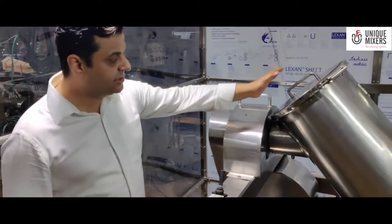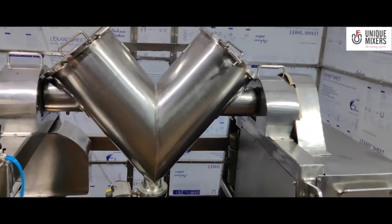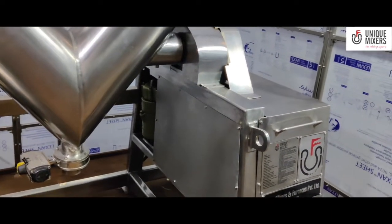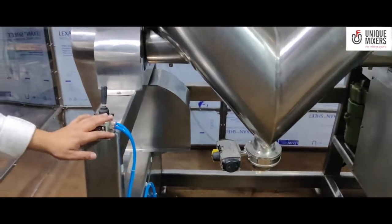The material is charged from the top. The machine is then rotated, the shell is then rotated. That's where the blending happens, and after the blending is completed we have a discharge valve here from which the product gets discharged.